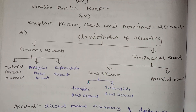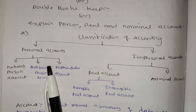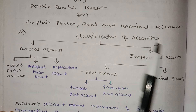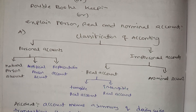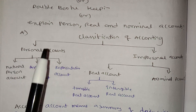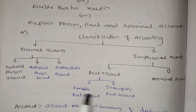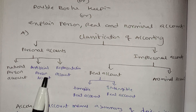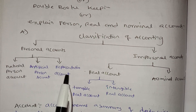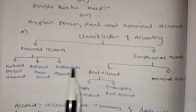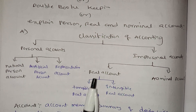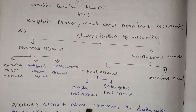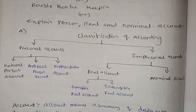Accounting has three main types: personal accounts, real accounts, and nominal accounts. Personal accounts can be divided into: natural person account, artificial person account, and representative account. Real accounts include tangible real accounts and intangible accounts. And then there are nominal accounts.